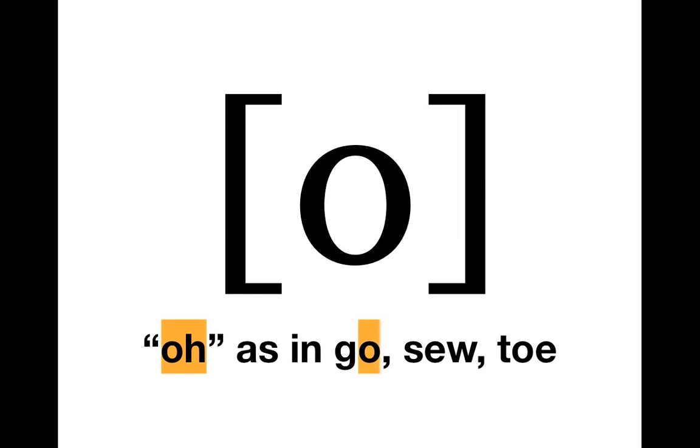Two more symbols to go. Our next symbol is the O symbol. So it looks like our normal lowercase O in side brackets, and it represents the sound O as in go, so, to.